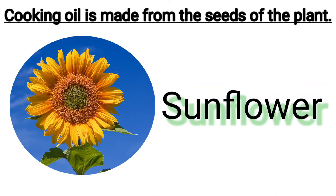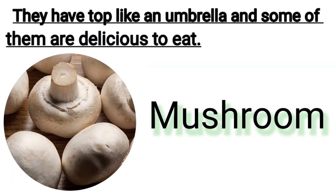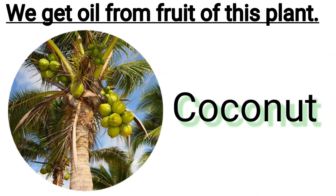Cooking oil is made from the seeds of this plant. Which is this plant? Sunflower. They have a top like an umbrella, and some of them are delicious to eat. We get oil from the fruit of this plant. This is coconut plant.